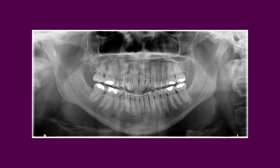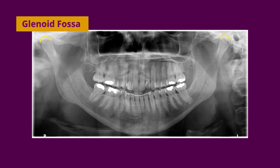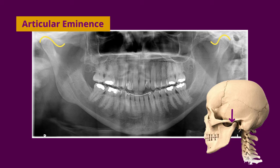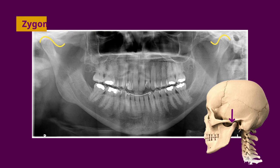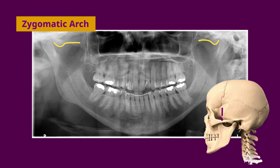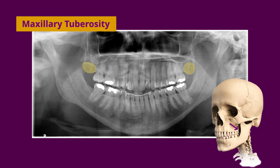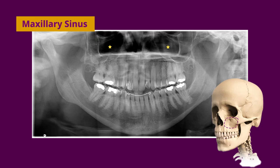Moving away from the mandible, up here this concave area is the glenoid fossa — the mandibular condyle sits in here. This rounded projection anterior to the glenoid fossa is the articular eminence. If we continue going forward on the skull we find the zygomatic arch. This rounded bone posterior to the area of the third molars in the maxilla is the maxillary tuberosity. This large radiolucent area surrounded by a thin radiopaque line is the maxillary sinus, surrounded by dense cortical bone.